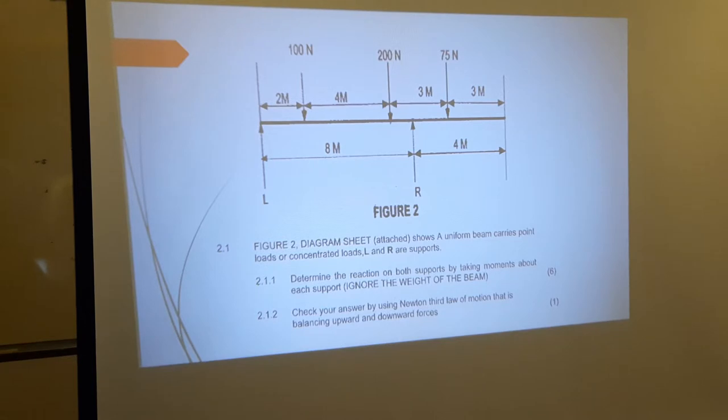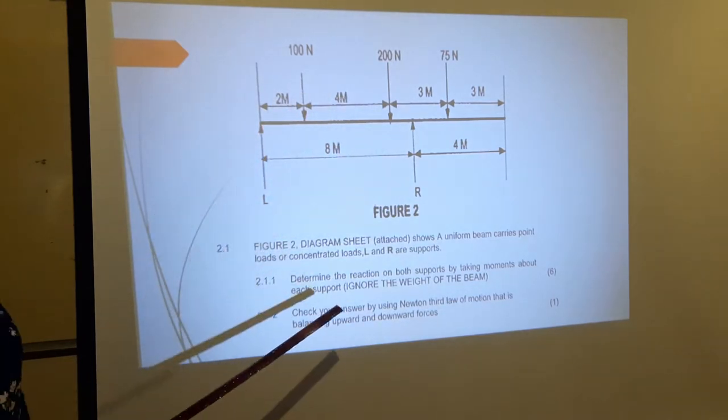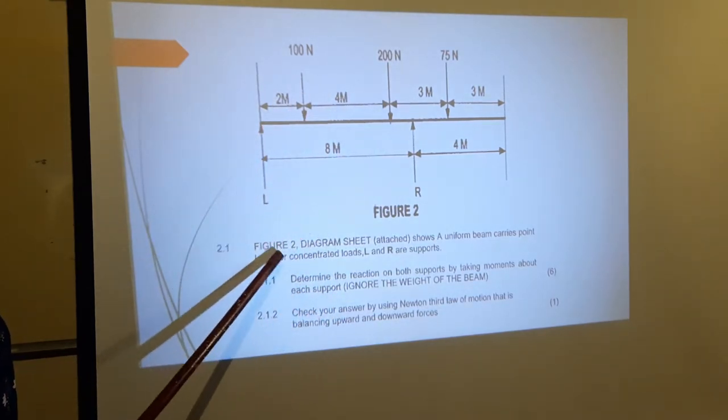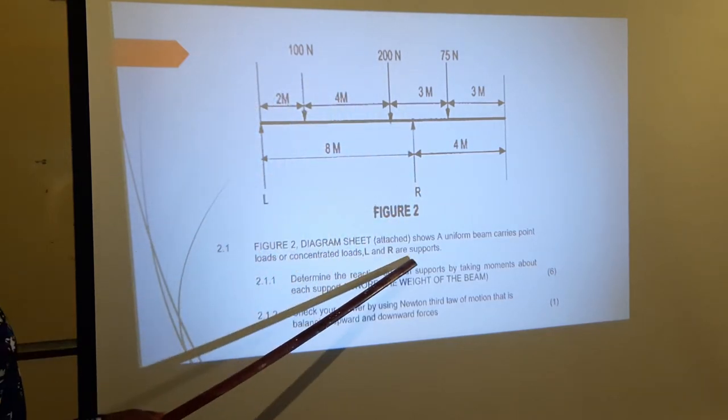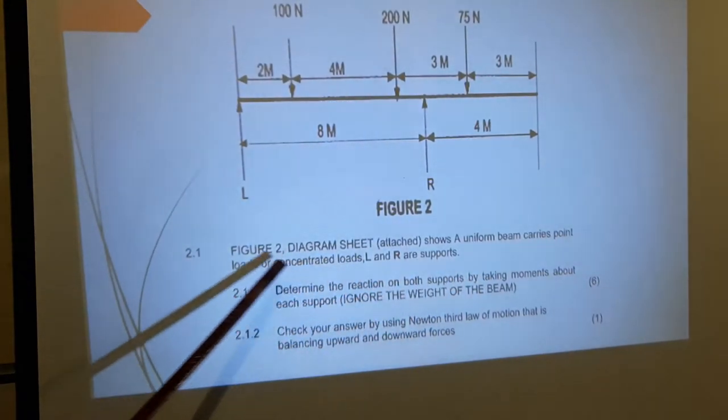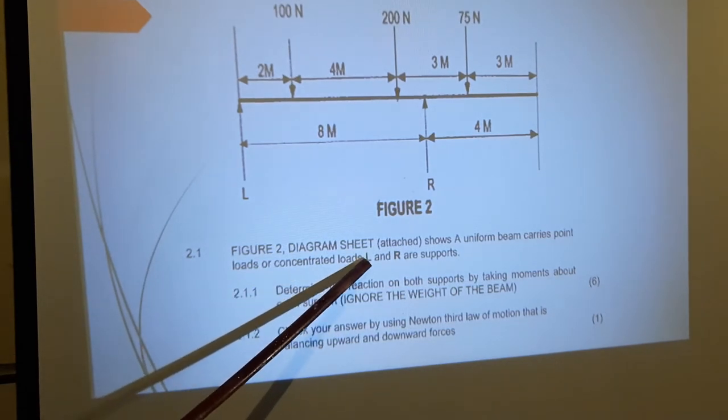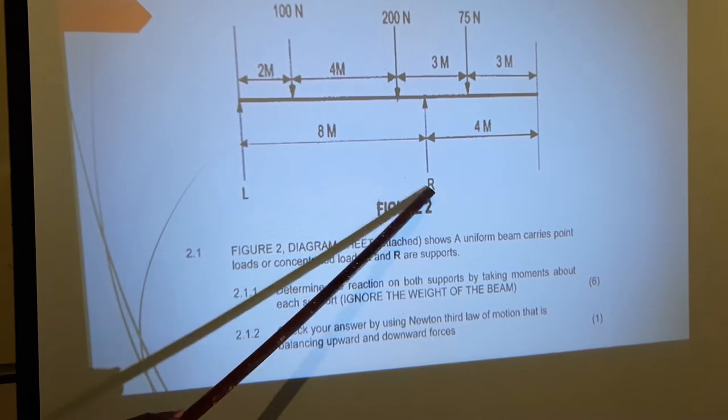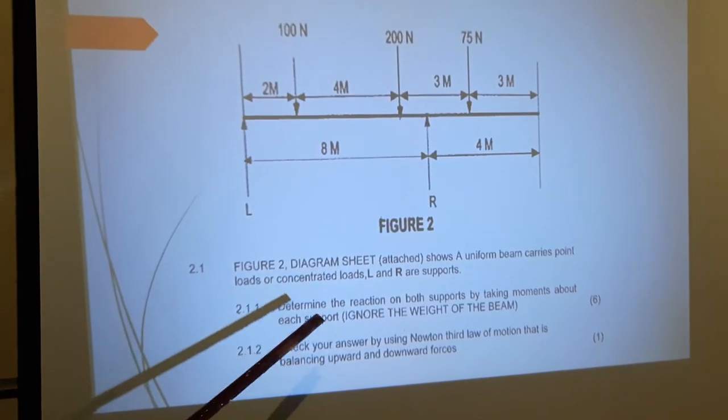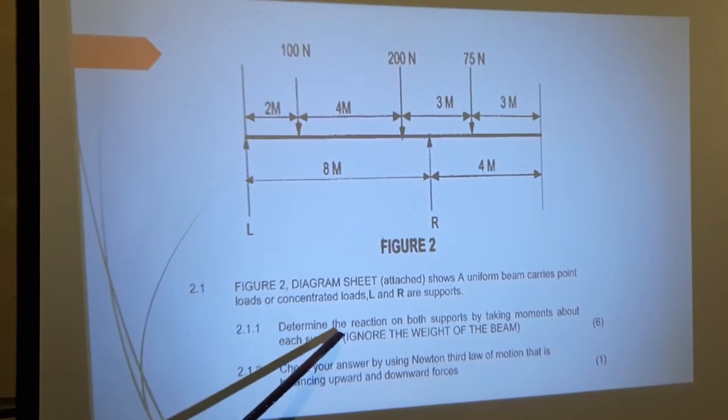Okay, now let's look at an example. This is directly from a question paper. They say Figure 2 on the diagram sheet, which I've put here, shows a uniform beam that carries point loads or concentrated loads. L and R are supports, so L and R are the reaction forces that you will need to calculate. Determine the reaction on both supports by taking moments about each support.